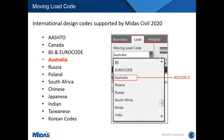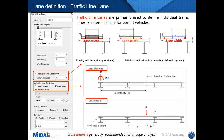Midas covers most international codes including Australia. After selecting the code, you define traffic lanes. Traffic lanes can be defined in two ways: the first is defining individual traffic lanes by referencing a reference element, where you can position the traffic lane at an eccentricity to that element. How the load is distributed is determined by the vehicular load distribution setting.